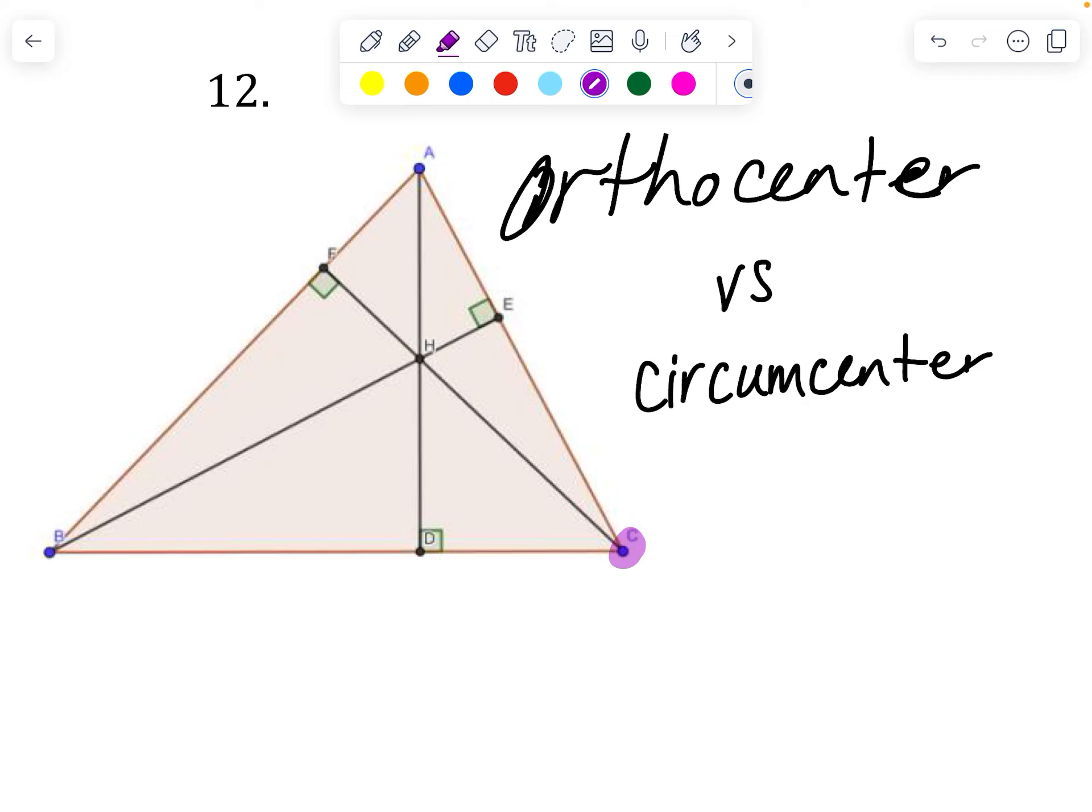Another way to check that might be a little bit less intuitive would be if it goes to a vertex, it must be an altitude. Your height, your orthocenter, point of concurrency, the altitudes always come from a vertex.